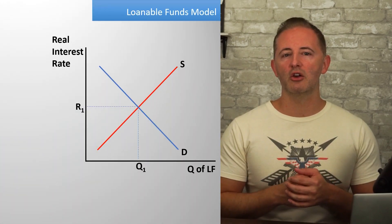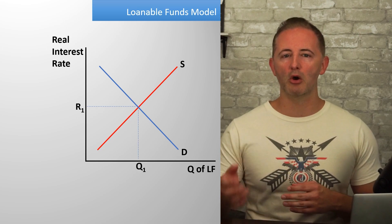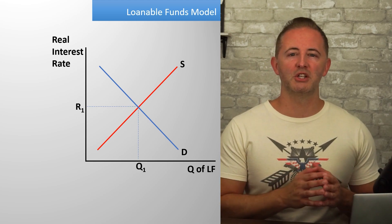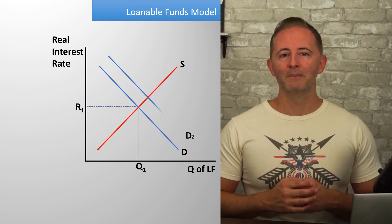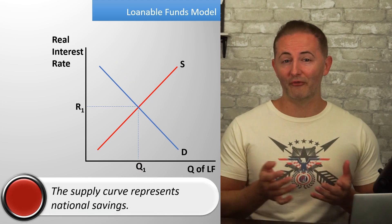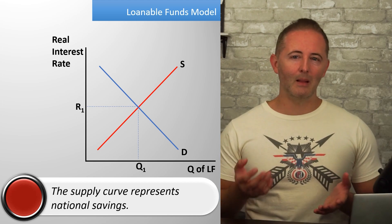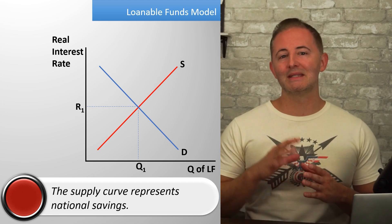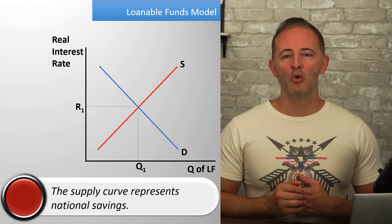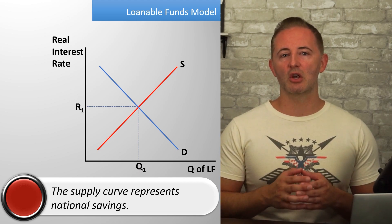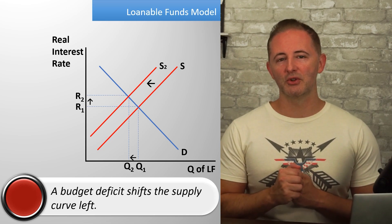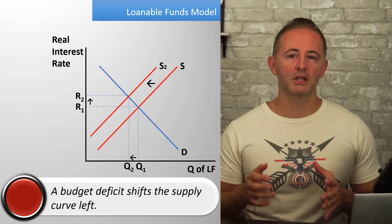Just a quick review of this model: the supply curve represents savers, and the demand curve represents borrowers. Depending on which textbook you look at, some draw this by shifting the supply curve, and others shift the demand curve — either one is totally fine and both are acceptable on the AP exam. The supply curve represents national savings, which includes both public and private savings. Public savings is another way to state the budget balance. When the federal government runs a budget deficit, public savings are therefore negative, so a budget deficit shifts the supply curve to the left. The important result is a higher real interest rate, and in turn, something known as crowding out.